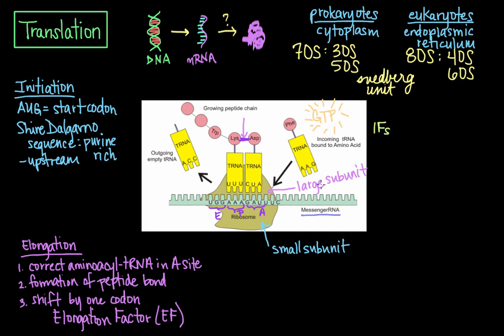When the ribosome reaches a stop codon, then termination starts, which is the last step in translation. Termination occurs when one of the three termination codons moves into this A site. These codons aren't recognized by any of the transfer RNAs. Instead, they are recognized by proteins called release factors.